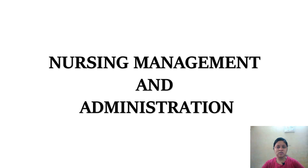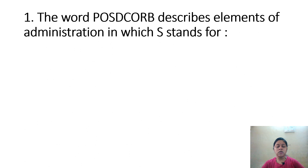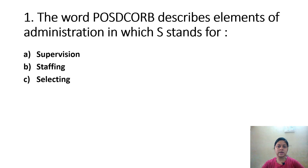Nursing Management and Administration. The word POSDCORB describes elements of administration in which S stands for: Option A, Separation; Option B, Staffing; Option C, Selecting; Option D, Sequencing. The correct answer is Option B, Staffing. Luther Gulick is the father of management, and POSDCORB is the function of management elements.